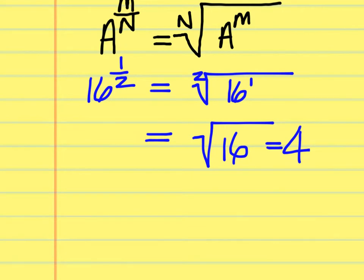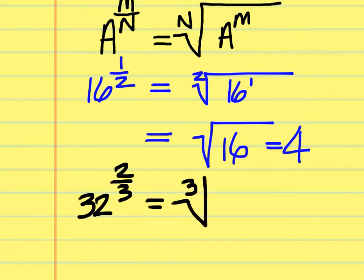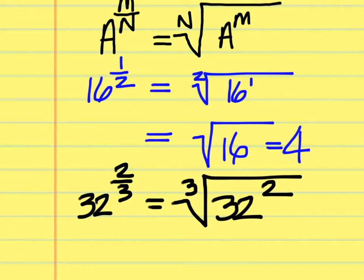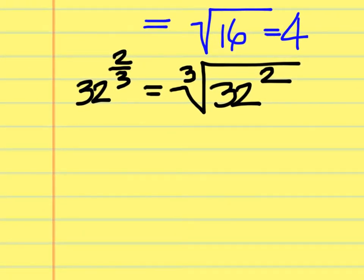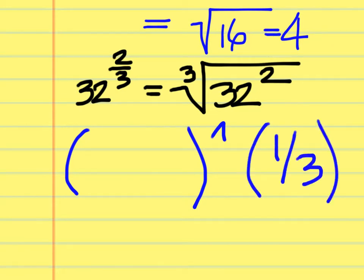Another example: 32 to the 2/3 power equals the third root of 32 to the second power. You can verify this on your calculator. The keystrokes involve using the caret (^) button, placing 32 squared in parentheses, and raising it to the power of (1/3). Since the original fraction was 2/3 and we've already used the 2 on the 32, you only need 1/3 as the exponent. Put parentheses around it.